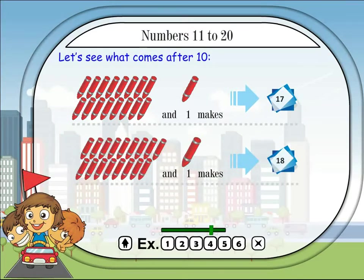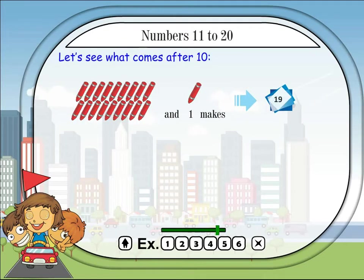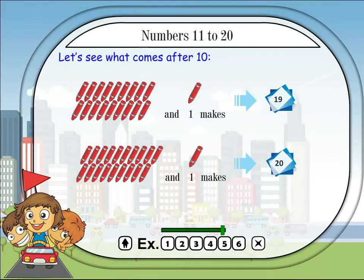Sixteen and one makes seventeen. Seventeen and one makes eighteen. Eighteen and one makes nineteen. Nineteen and one makes twenty.